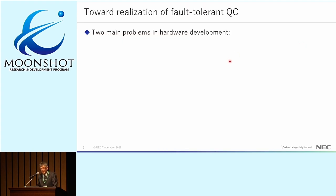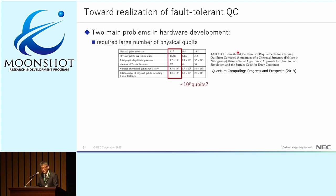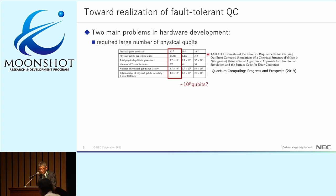Towards the realization of this fault-tolerant quantum computer, there are two main challenges in hardware development. The first is the formidably large number of physical qubits required — depending on many parameters such as error rate and error correction code, the estimate is 10 to the 8th number of qubits to run some useful quantum algorithms.